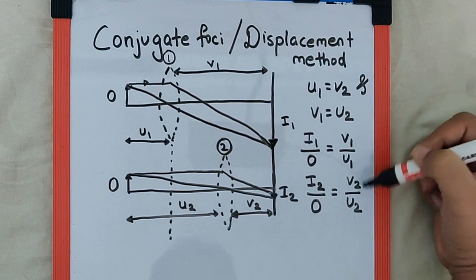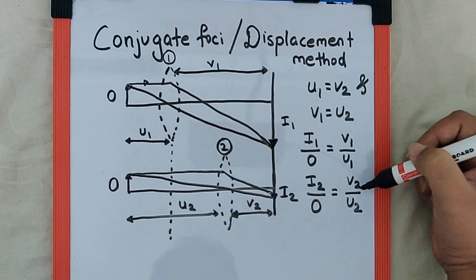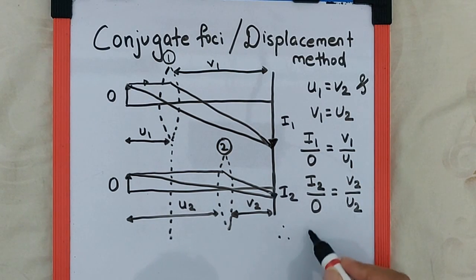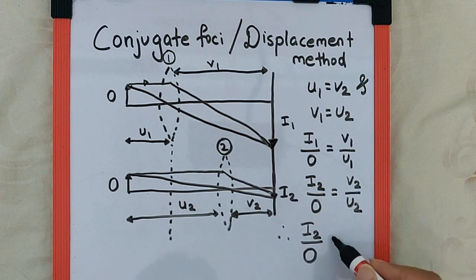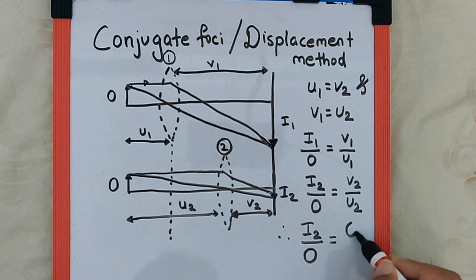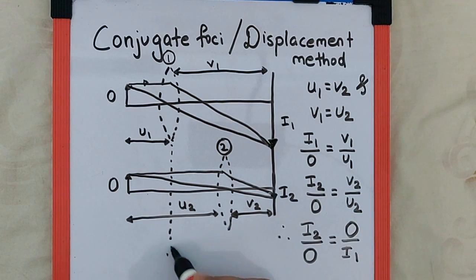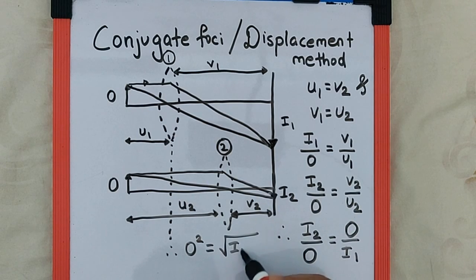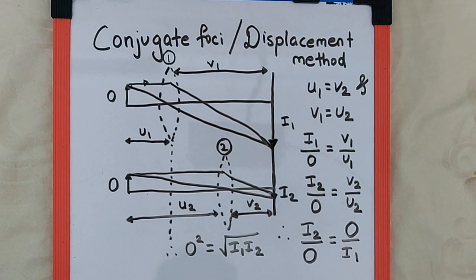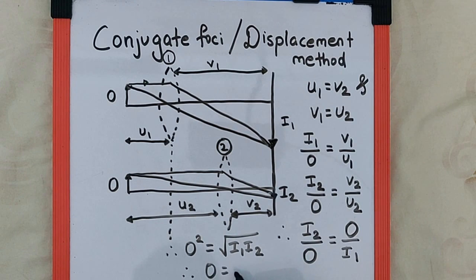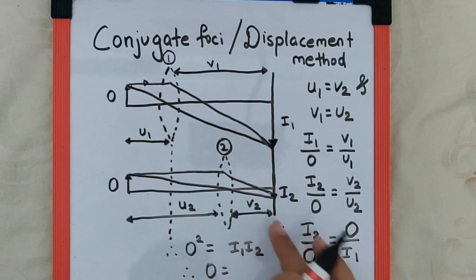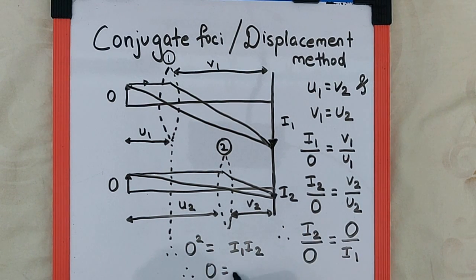it is kind of reciprocal of each other. If they are reciprocal and equal, then the first image over object equals object over second image, which gives us O squared equals I1 times I2, and therefore O equals the square root of I1 times I2.